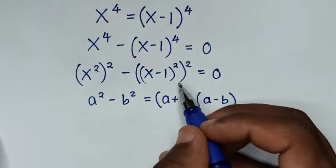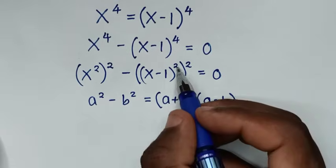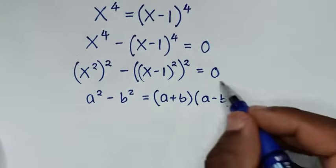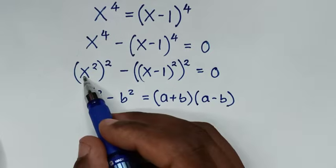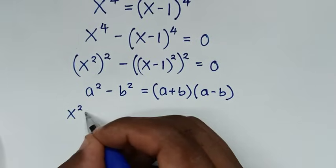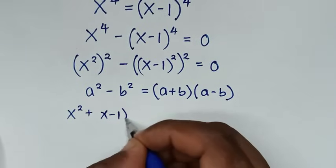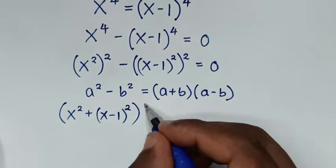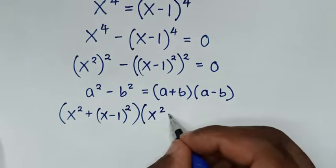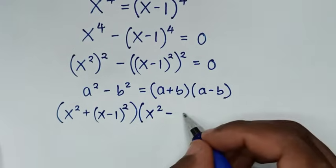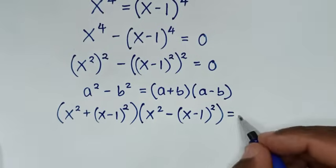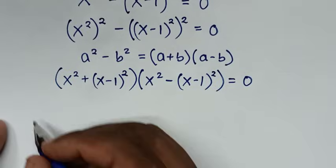And b squared is x minus 1 bracket squared bracket squared, so b is x minus 1 bracket squared. Applying the rule: the a plus b part gives x squared plus x minus 1 bracket squared, and the a minus b part gives x squared minus x minus 1 bracket squared, all equal to 0.